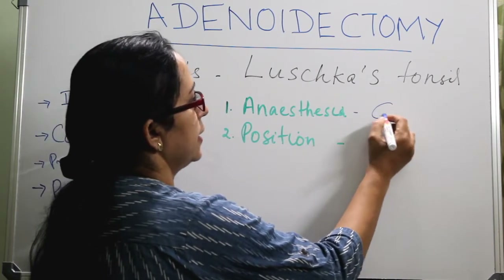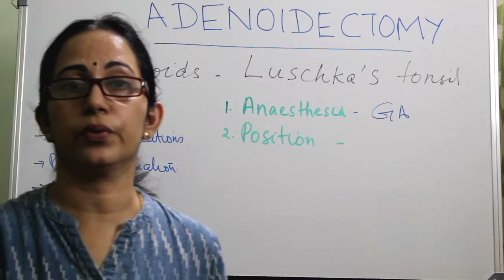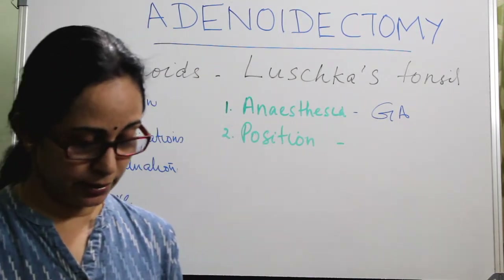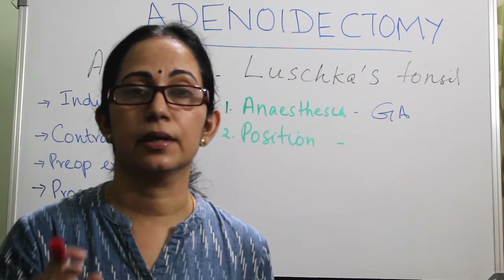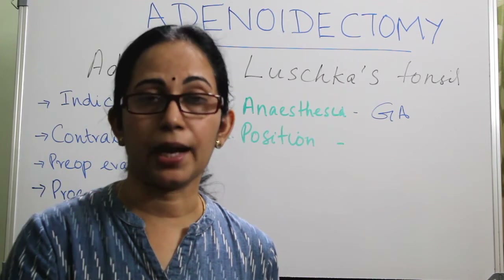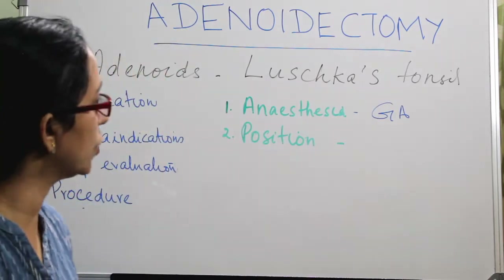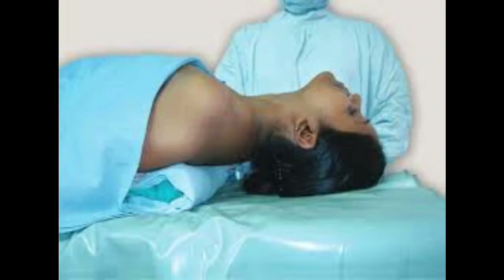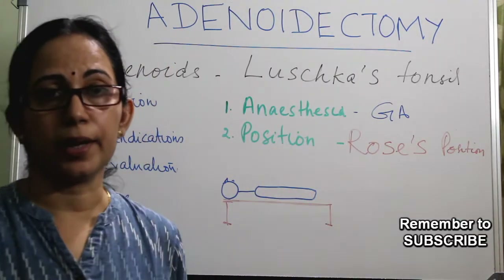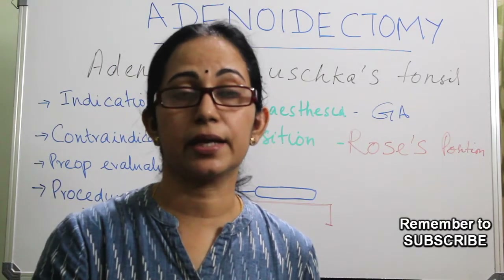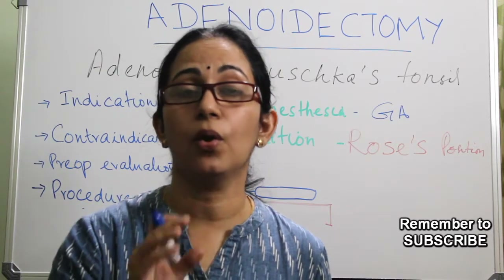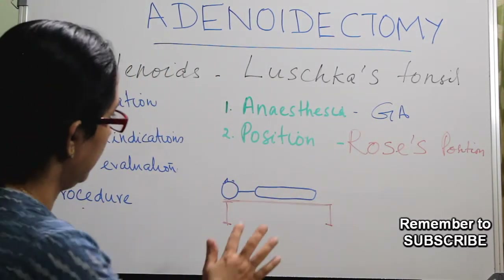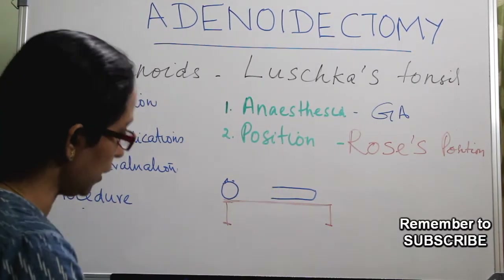The next is the procedure itself. Anesthesia is general anesthesia; since you are doing adenoidectomy, you cannot go for nasotracheal intubation, so it is general anesthesia with orotracheal intubation. The position is the Rosé position, which is the position for all surgeries done in the nasopharynx and oropharynx. The patient is supine, and since the surgery is done in the nasopharynx and possibly the oropharynx, better visualization is needed — so a pillow is kept under the shoulders.